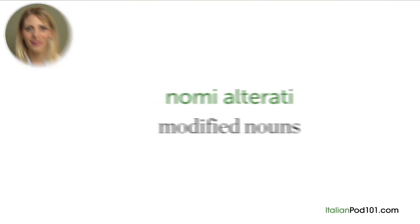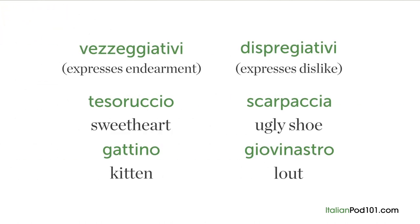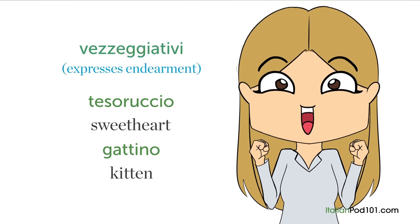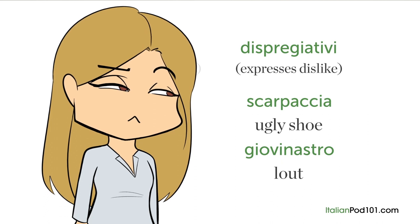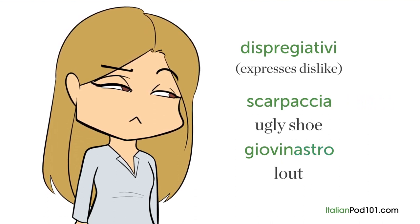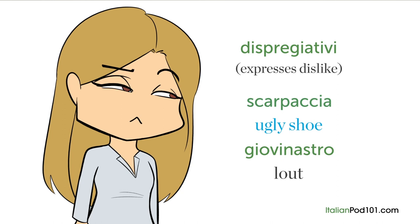To describe something positively or negatively, you can use 'peggiorativi' and 'dispregiativi.' Peggiorativi express endearment — common suffixes are -uccio and -ino: for example, 'tesoruccio' — sweetheart; 'gattino' — kitten. Dispregiativi express dislike — common suffixes are -accio and -astro: for example, 'scarpaccia' — ugly shoe; 'giovinastro' — lout.